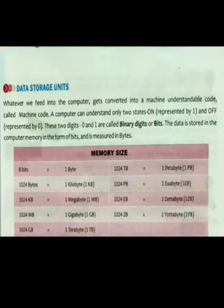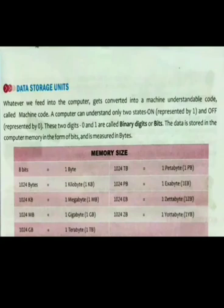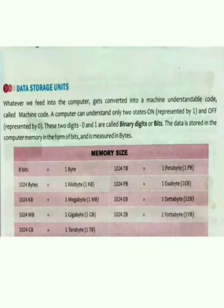Next topic: data storage units. Whatever we feed into the computer gets converted into a machine-understandable code called machine code. A computer can understand only two states — on, represented by one, and off, represented by zero. These two digits, zero and one, are called binary digits or bits. The data is stored in the computer memory in the form of bits and is measured in bytes. A computer is an electronic machine and it only understands the two states of electricity: on and off.